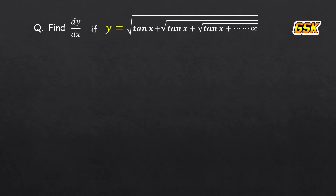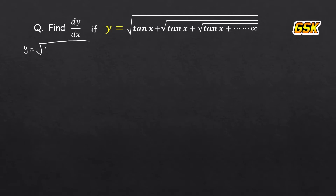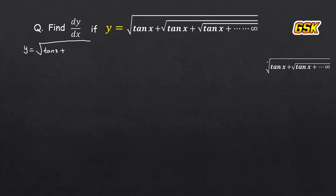Find dy by dx if y is equal to the square root of tan x plus the square root of tan x plus the square root of tan x, and so on to infinity. This is a question related to infinity series. So first, let us note that y equals the square root of tan x plus the square root of tan x plus the square root of tan x, continuing to infinity.